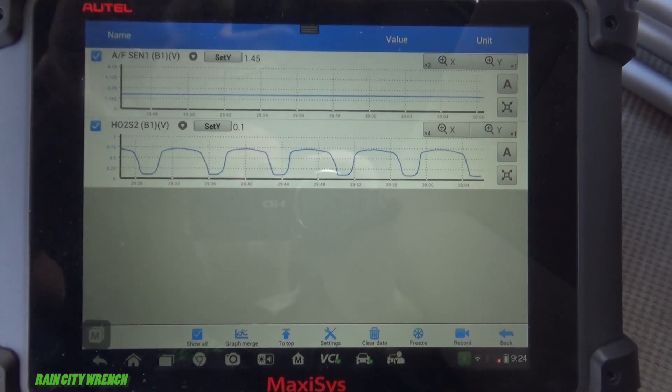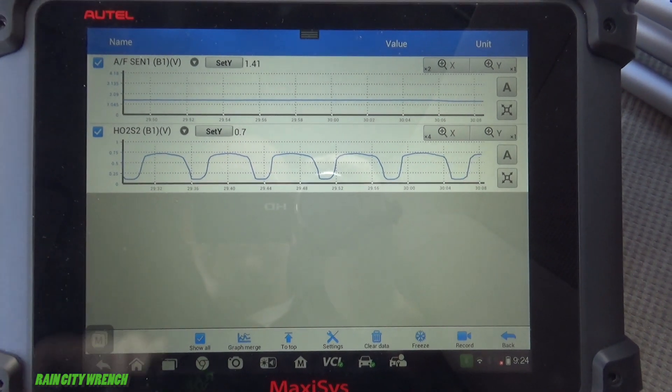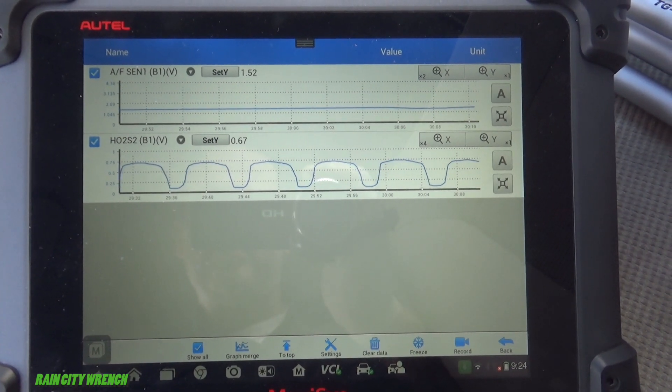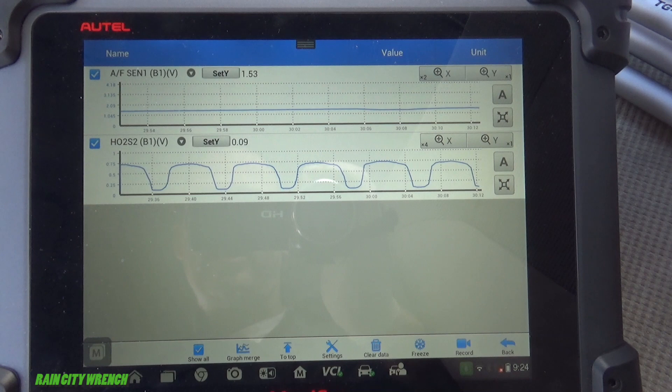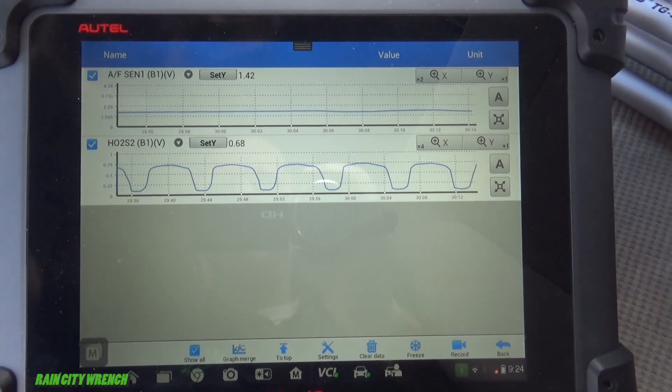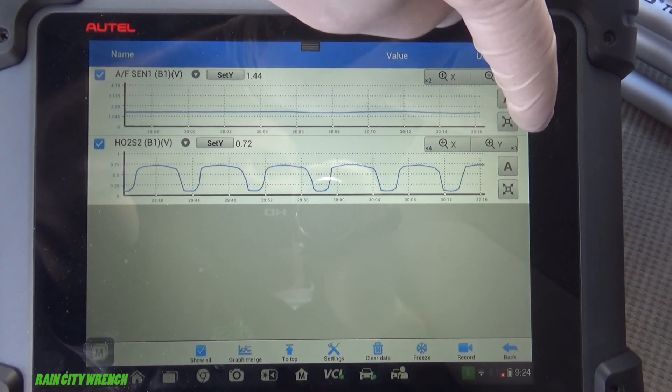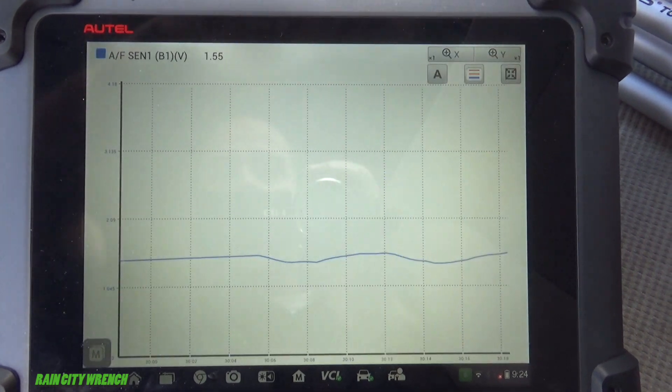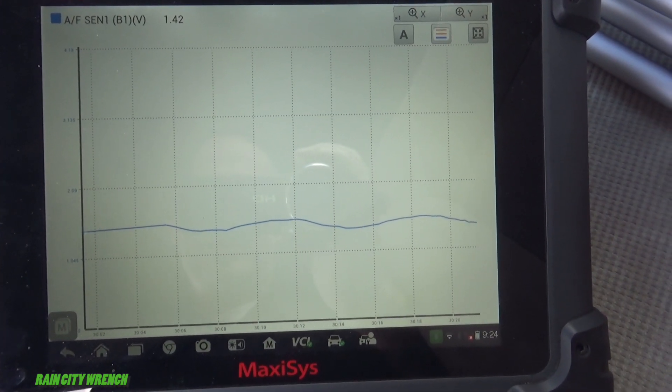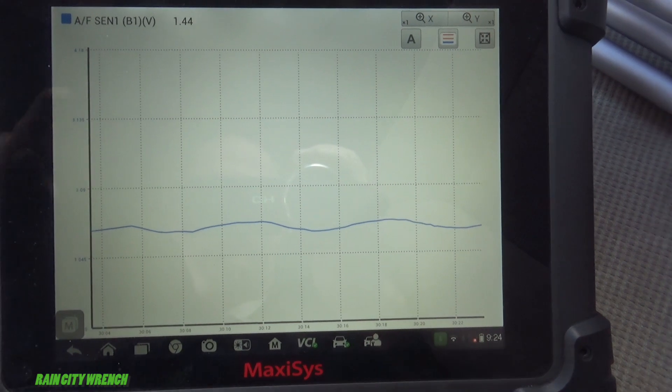We can look at our upstream. Now the upstream on this particular setup is an air fuel ratio sensor. They're a little bit more difficult to test. But this one here has about 1.4 volts.